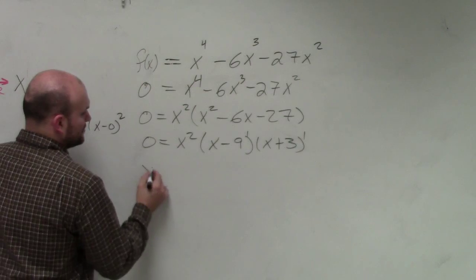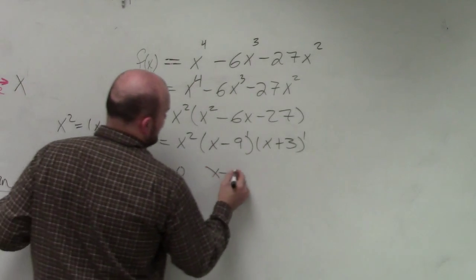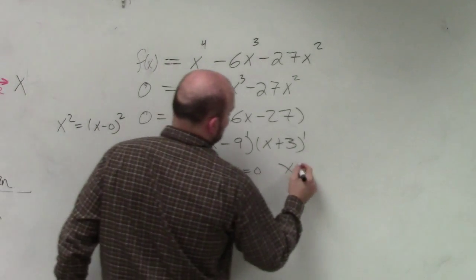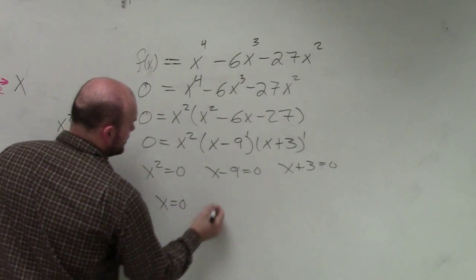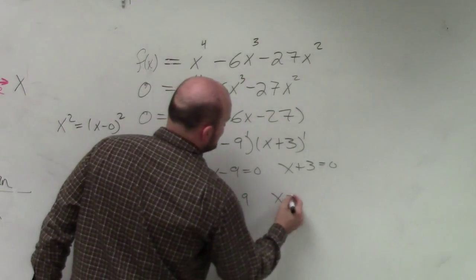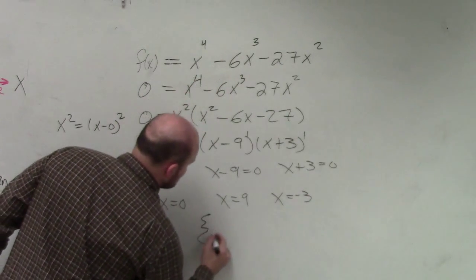So then I just set these equal to 0. x squared equals 0, x minus 9 equals 0, x plus 3 equals 0. And then you go ahead and solve: x equals 0, x equals 9, x equals negative 3. You can write in a solution set.